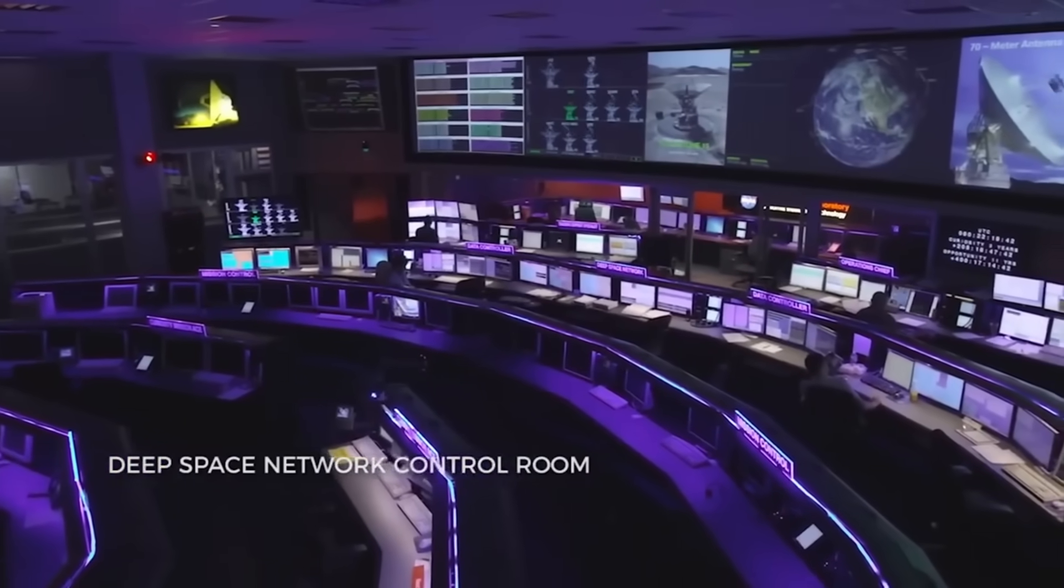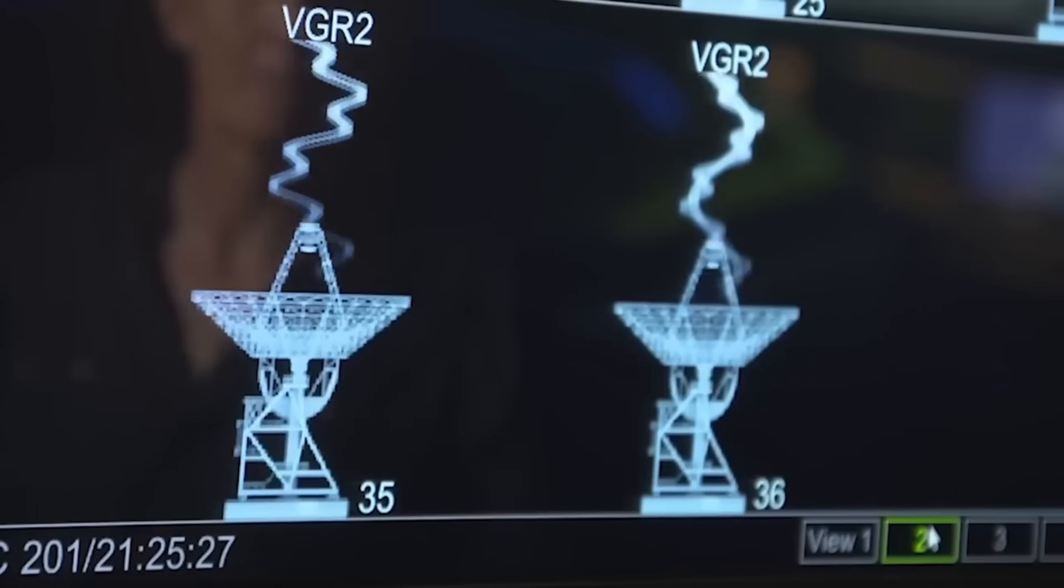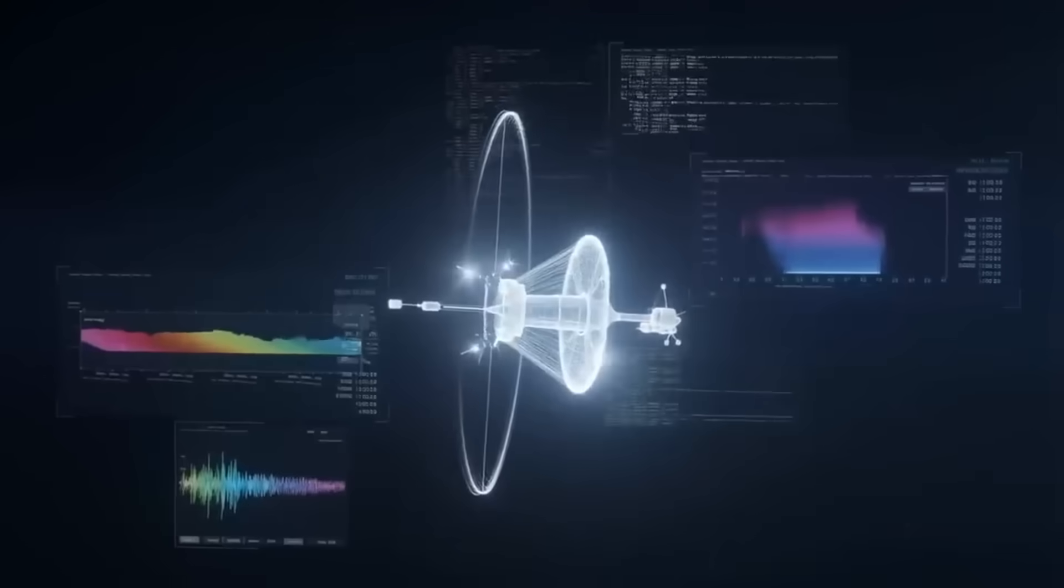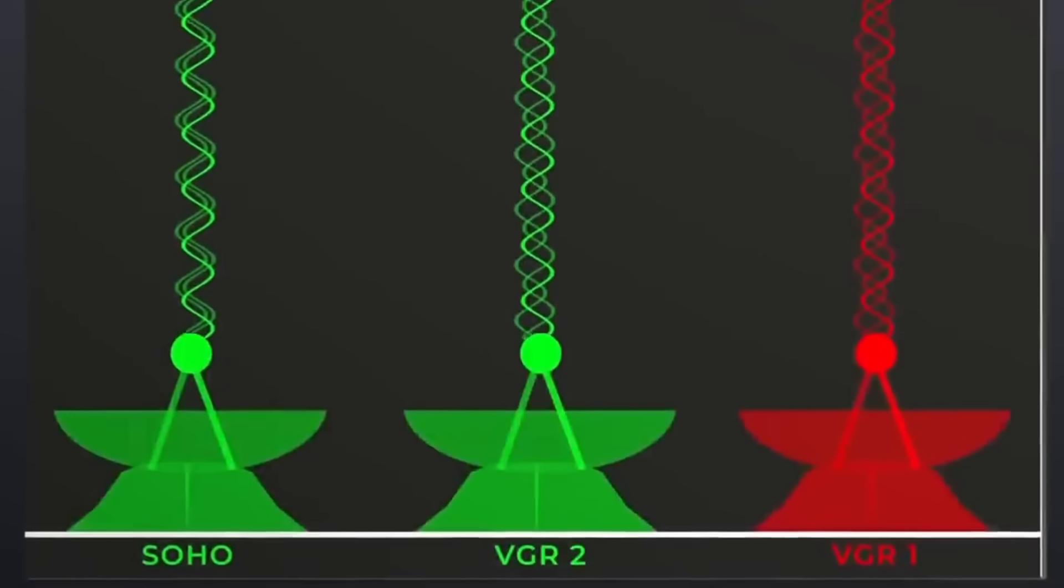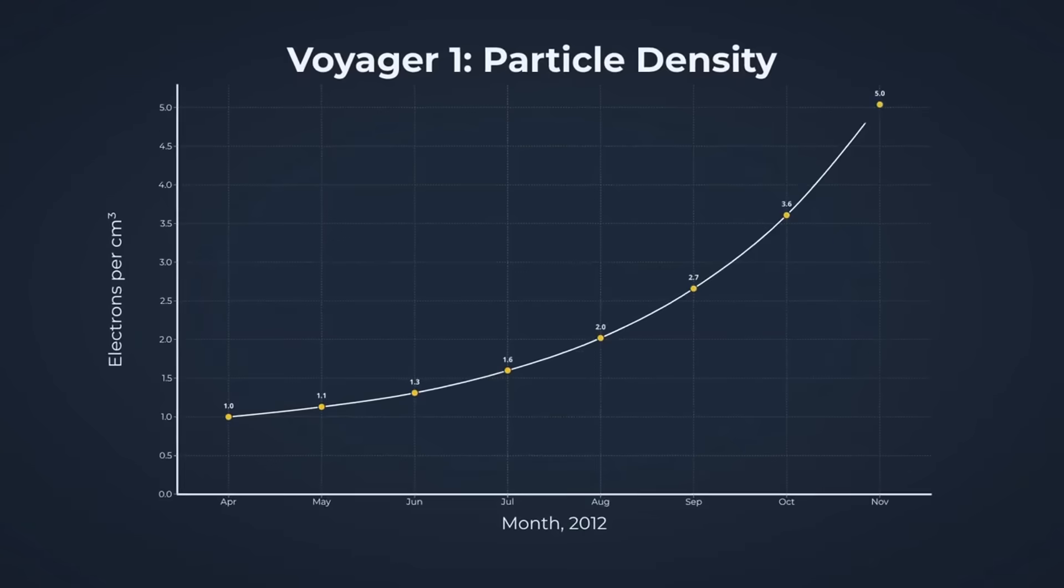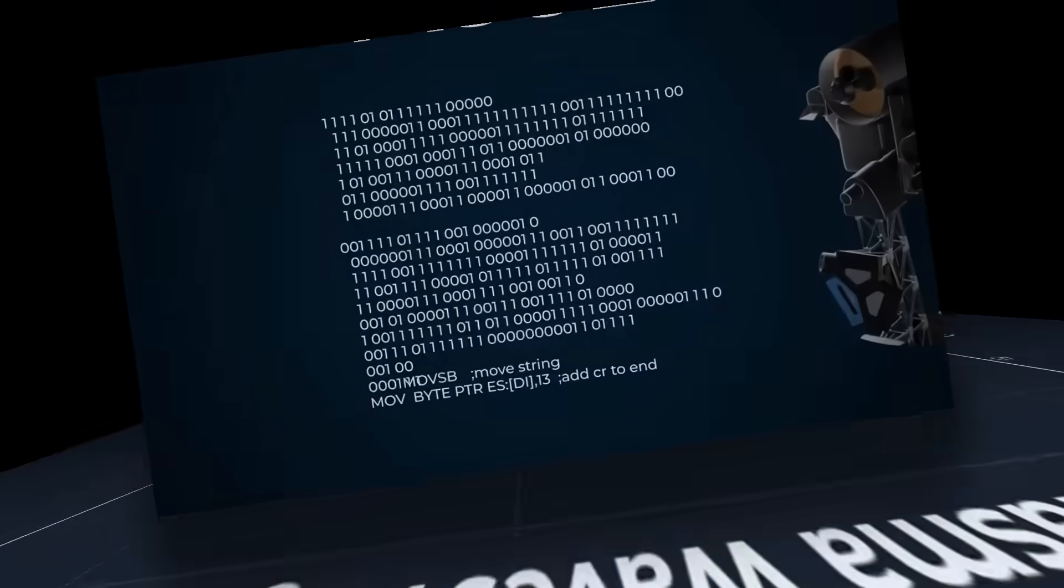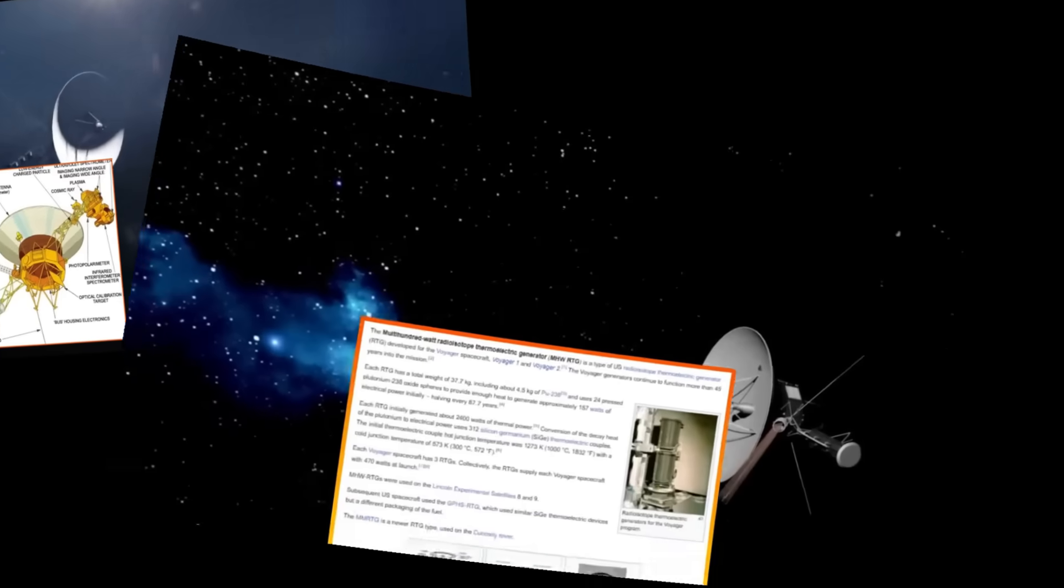The patterns suggest an underlying structure that traditional computing couldn't detect. What if the so-called glitch wasn't just a malfunction, but the faint echo of information we weren't equipped to read in the 1970s? What if Voyager has been collecting more than we programmed it to?